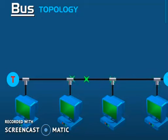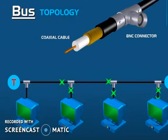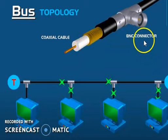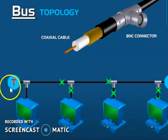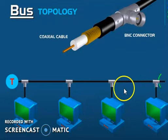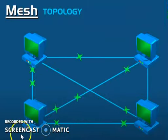The third topology is bus topology, where data travels on a bus. Bus topology uses a coaxial cable and BNC connectors, and requires a terminator at each end. If there is no terminator, signals will bounce back and disrupt the whole network, causing data loss.